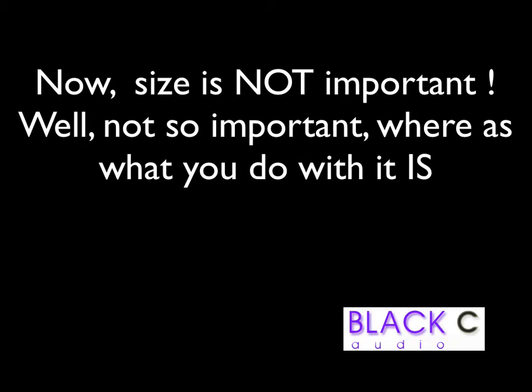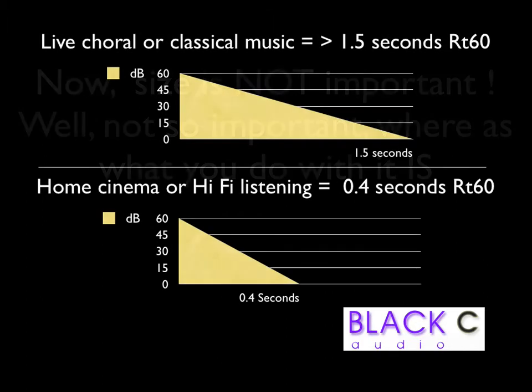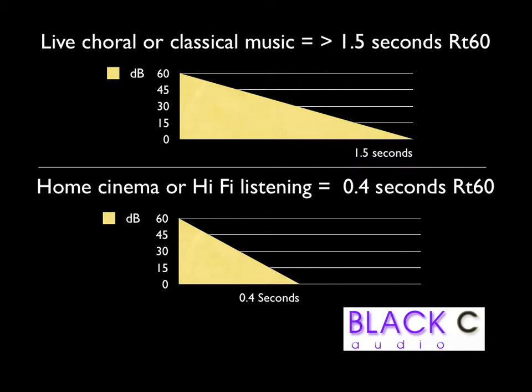So, for example, a room for live classical music would need quite a long reverberation time, even longer for live choral, whereas a classroom where speech intelligibility is important would need quite a short reverberation time. Practically, current recommendations would suggest something along the lines of 0.4 seconds for a home cinema, while a concert hall for classical music would need an RT60 of a little greater than 1.5 seconds.